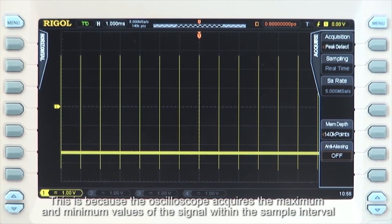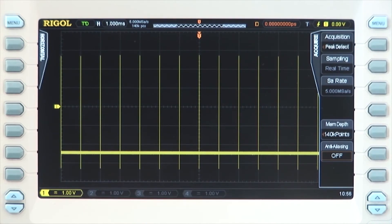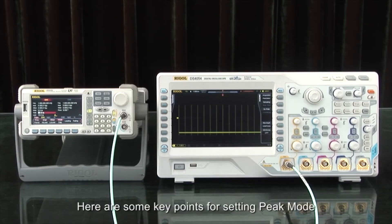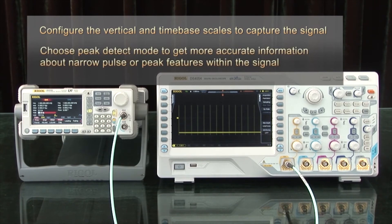To capture the envelope or the narrow pulse details that might be lost using normal sampling techniques, here are some key points for setting peak mode. Configure the vertical and time-based scales to capture the signal and choose peak detect mode to get more accurate information about narrow pulse or peak thickness details.